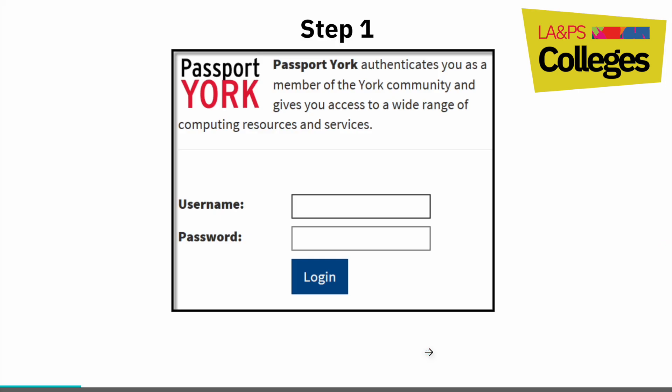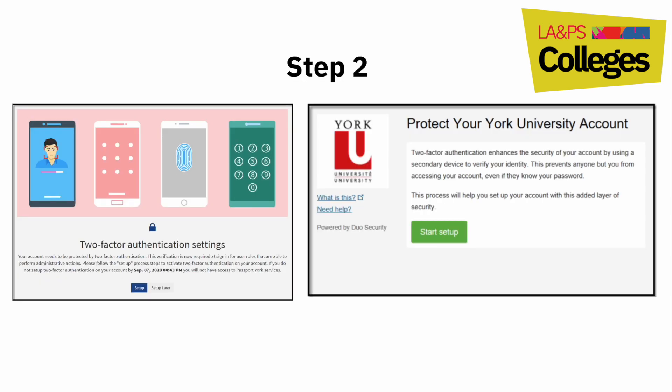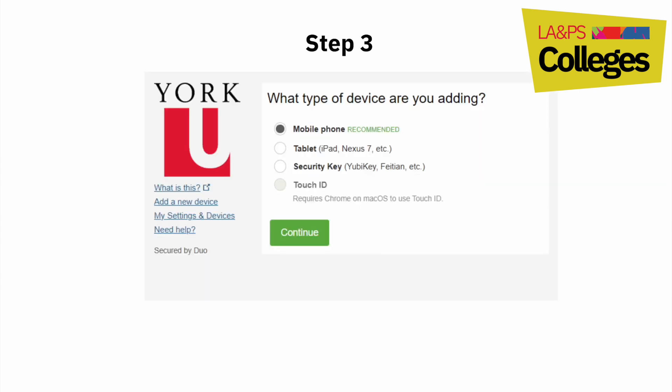For extra login security, York uses two-factor authentication to protect your digital account. To set this up, enable the Duo Mobile system. Setting up your 2FA on your phone is recommended as it is a device you always have on you and is easily accessible. To start, head over to Manage My Services and log in — you'll be prompted to begin setup by a green button.